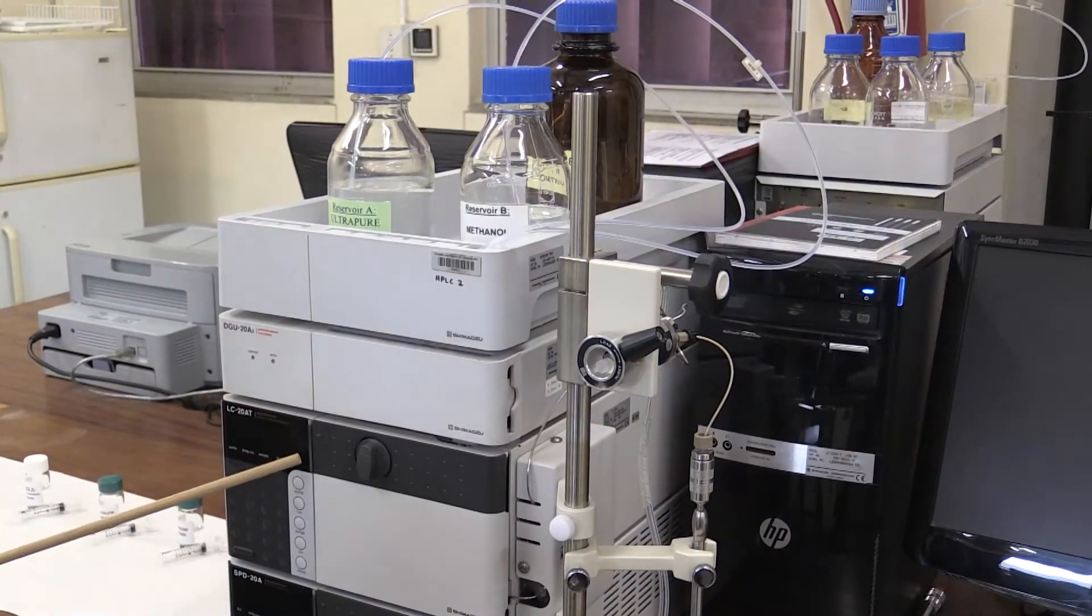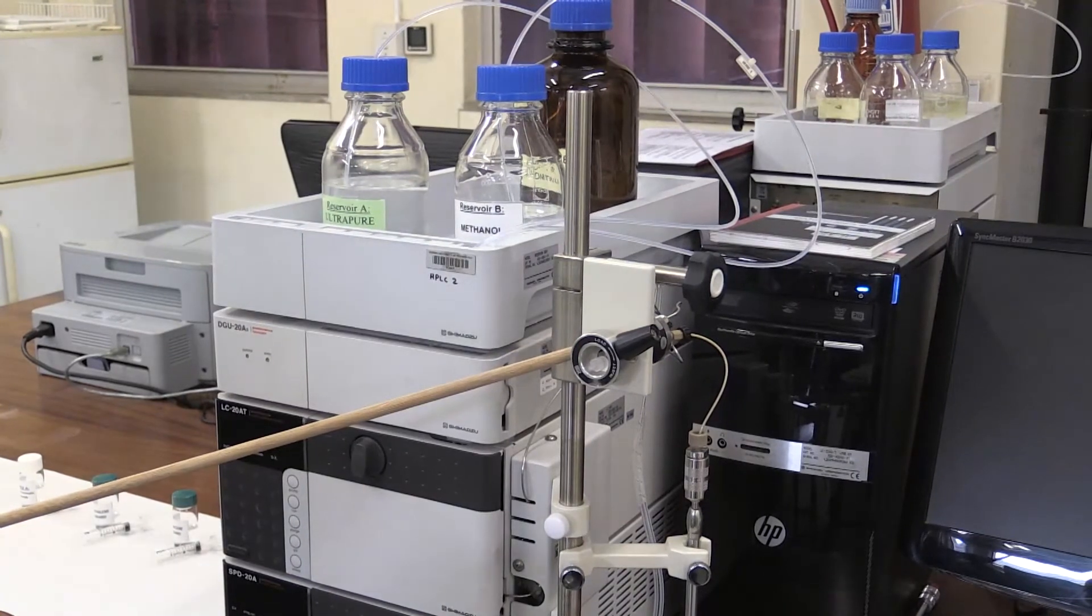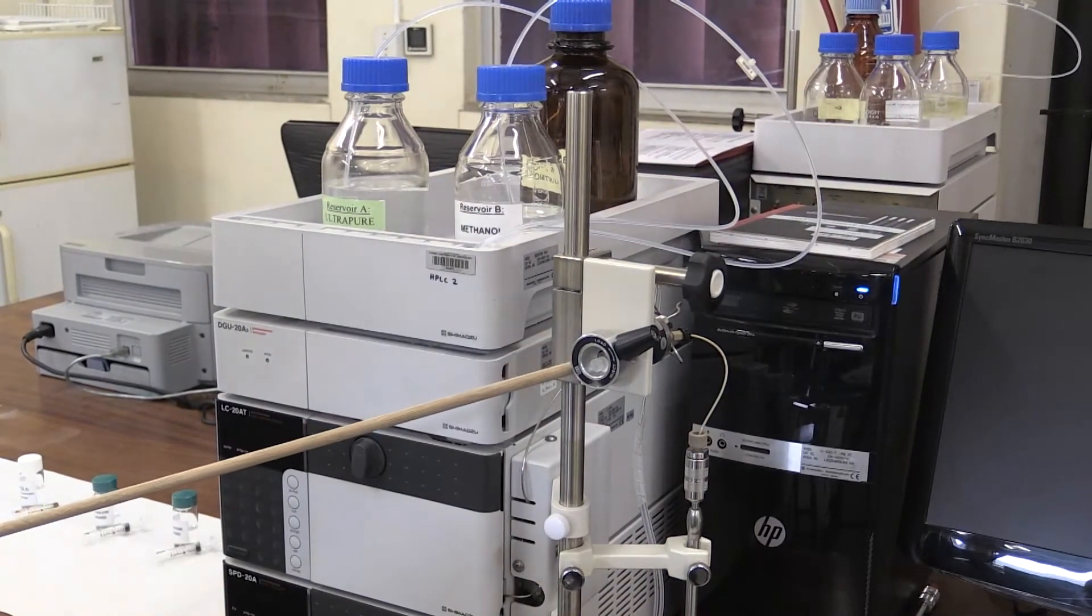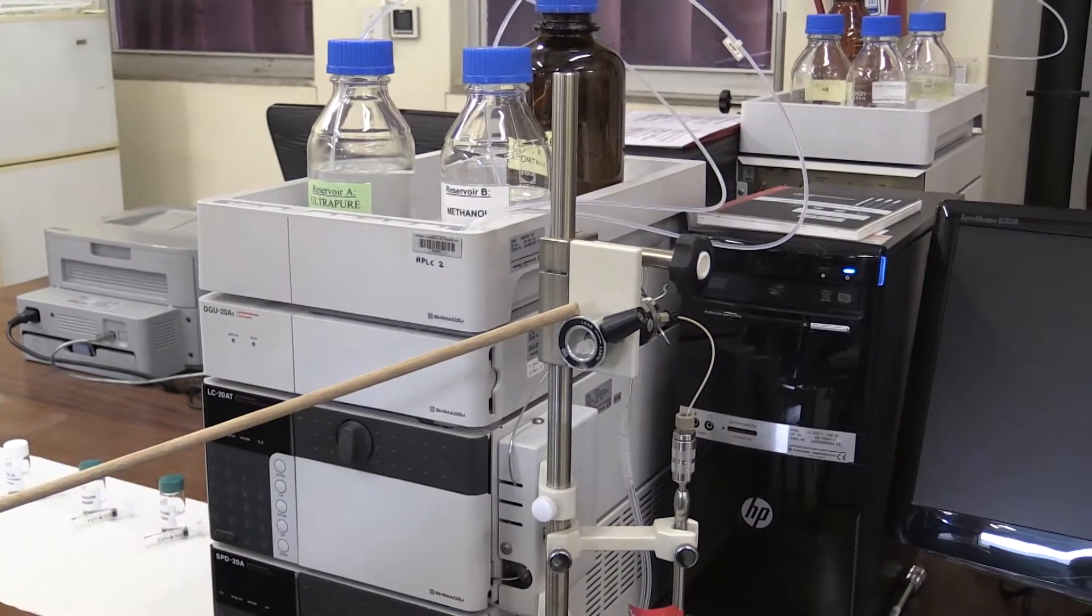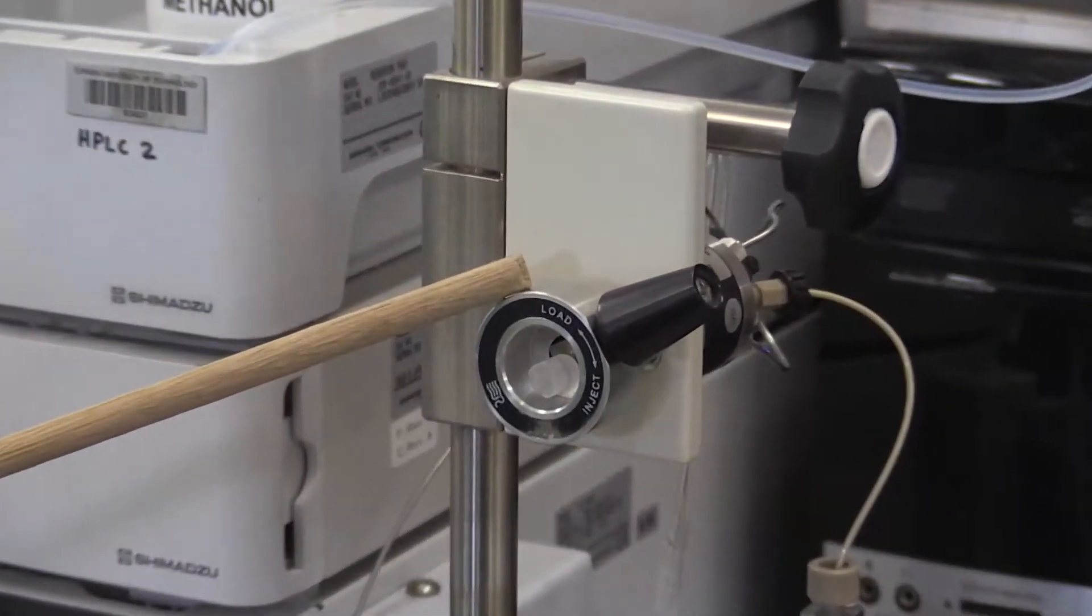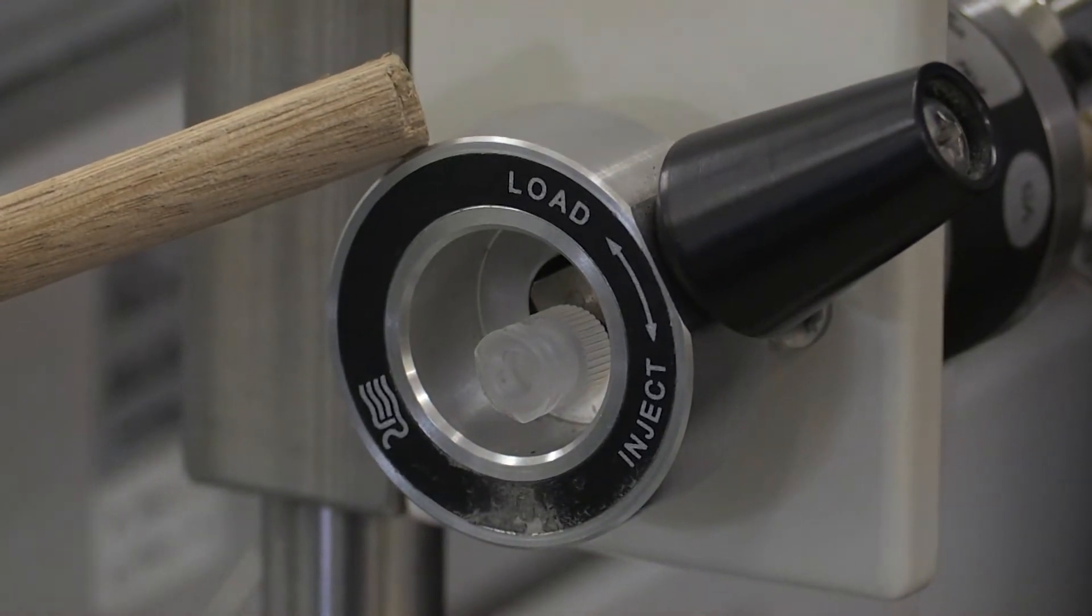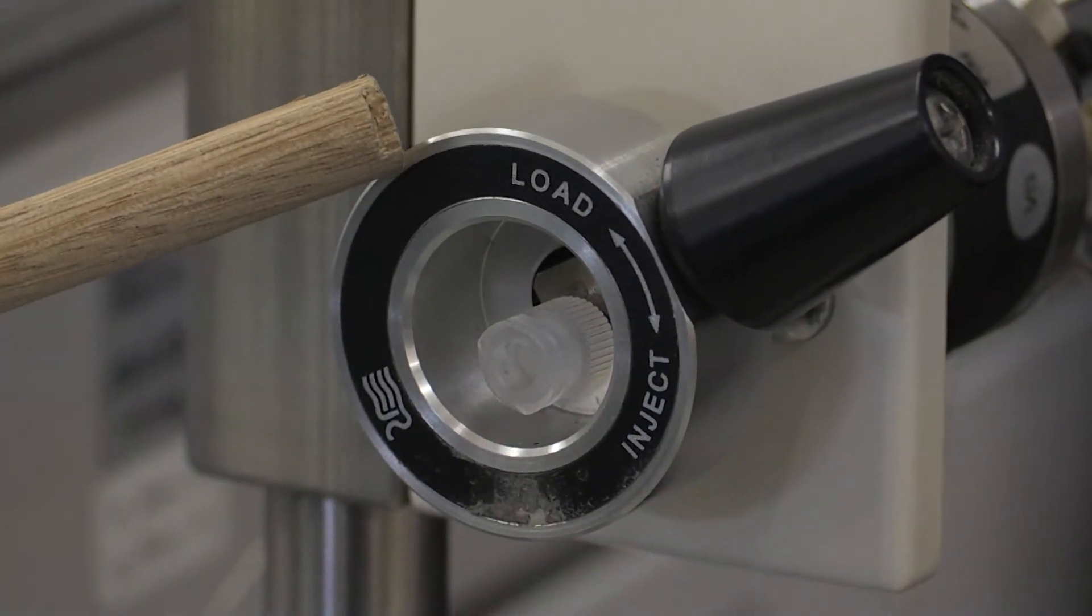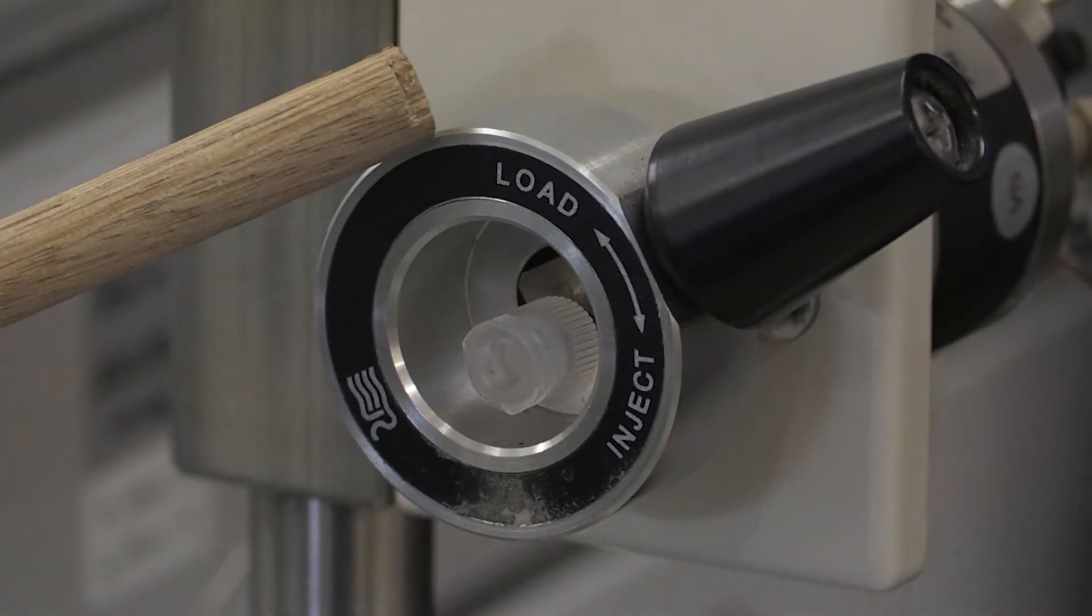Then the injector port. The injector port is used to introduce your sample to the system. The injector unit has two positions: the load position, which is used to introduce the sample into the sample loop, of which in this instrument is 20 microliters. When you're ready to start with your analysis, you move to the injector position.